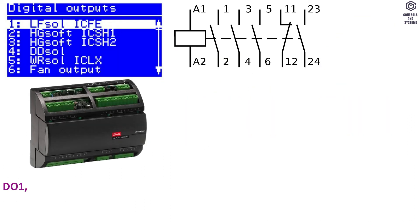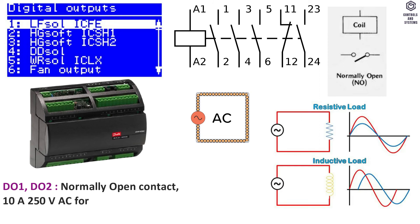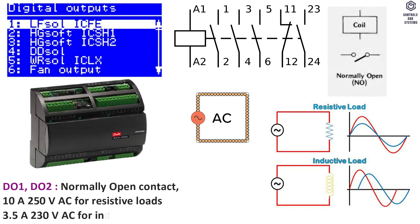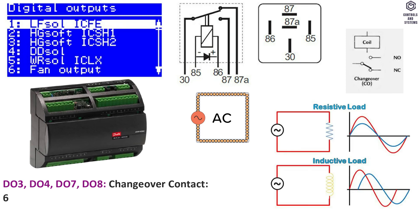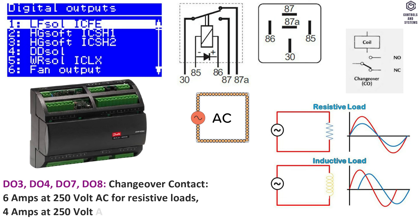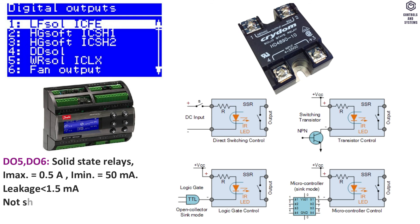Digital outputs — normally open contact: 10A at 250V AC for resistive loads, 3.5A at 230V AC for inductive loads. Change-over contact: 6A at 250V AC for resistive loads, 4A at 250V AC for inductive loads. Solid state relays: I maximum 0.5A, I minimum 50mA, leakage less than 1.5mA, not short-circuit protected.